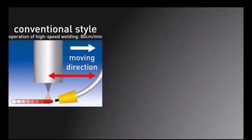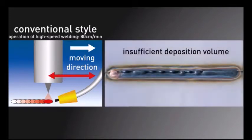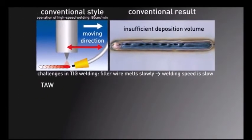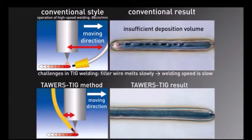However, there is an issue in that the wire melts slowly and welding cannot be sped up because conventional TIG welding feeds the filler wire to the molten pool on the workpiece for welding. In the Towers TIG system that we are introducing,